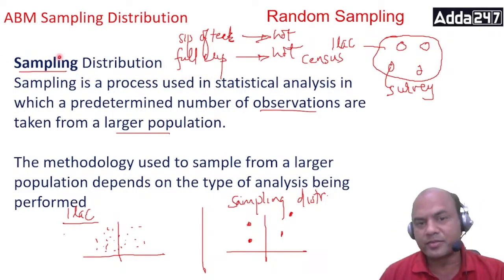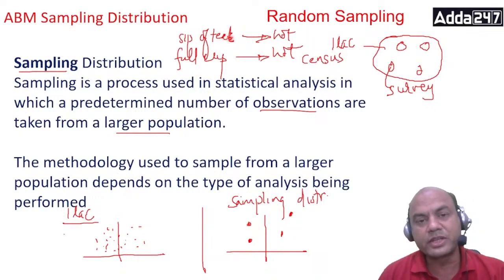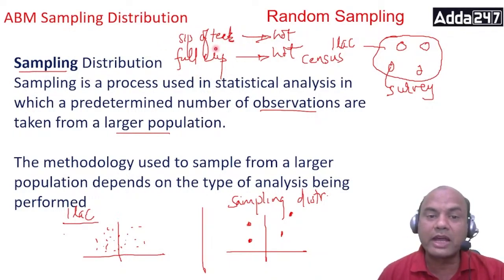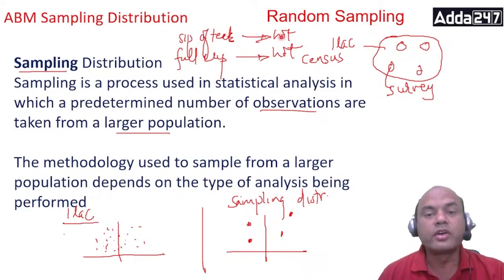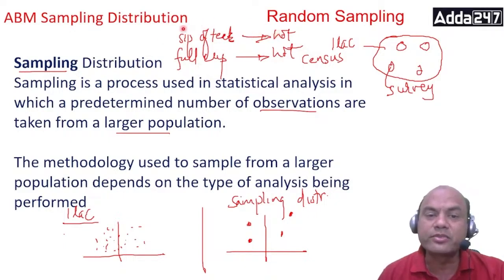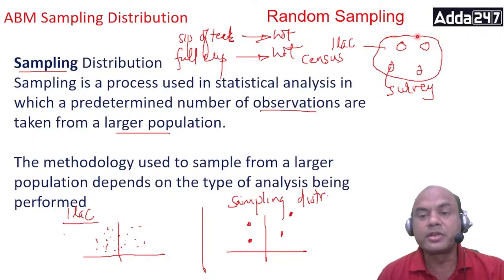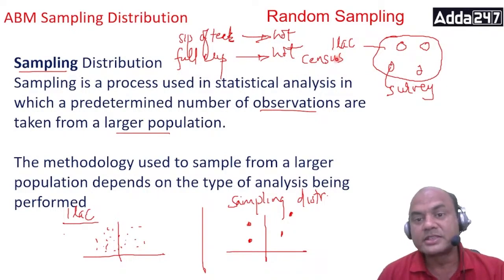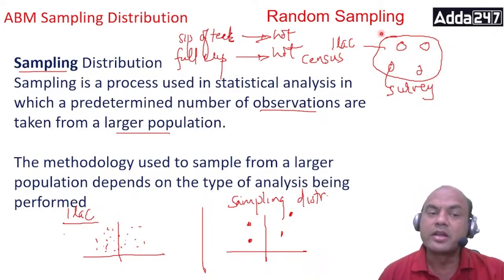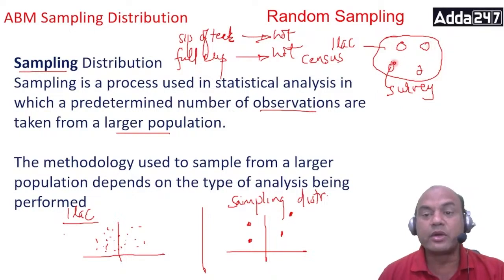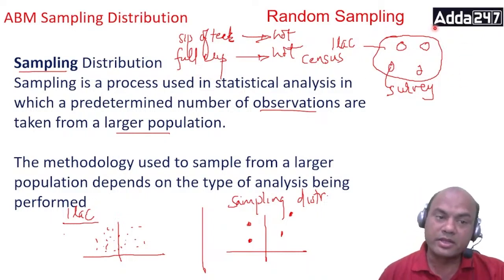Now for sampling, suppose I give you a cup of tea and ask whether it is hot or not — will you drink the whole cup immediately? No. You will just take a sip of tea. If that sip is hot, it means the whole cup is hot. That is the basic logic of sampling: I will select those samples which are indicative of the full population. Suppose a city of one lakh — if I survey the whole one lakh, it is called a census. But when I do sampling, I take samples and survey those samples as representatives of the full population.